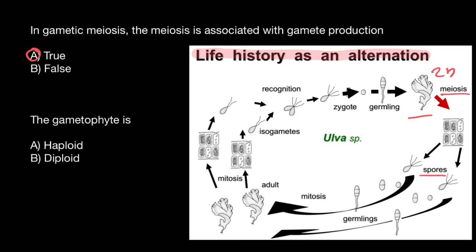So spores would be 1N — haploid. And the spores, through mitosis, would produce germlings, which would also be haploid, 1N. And through mitosis they would produce an adult organism — in this case, this is alga, Ulva. They are going to be haploid, 1N. And through the process of mitosis, they would produce gametes.